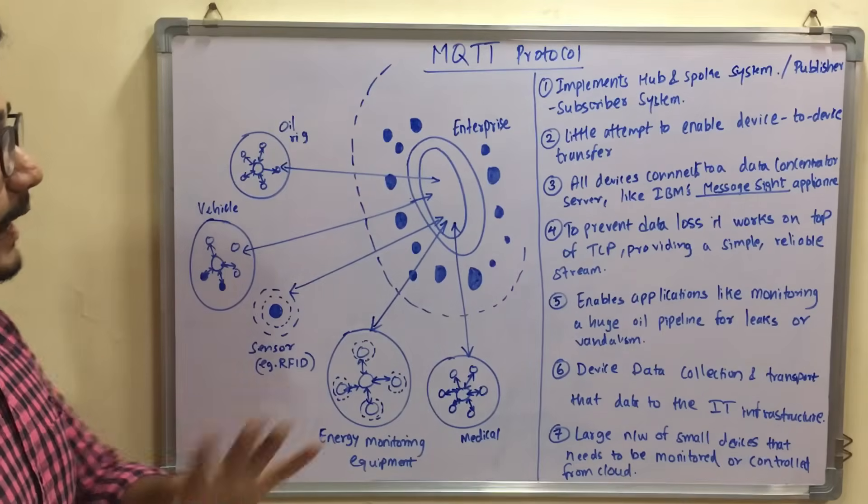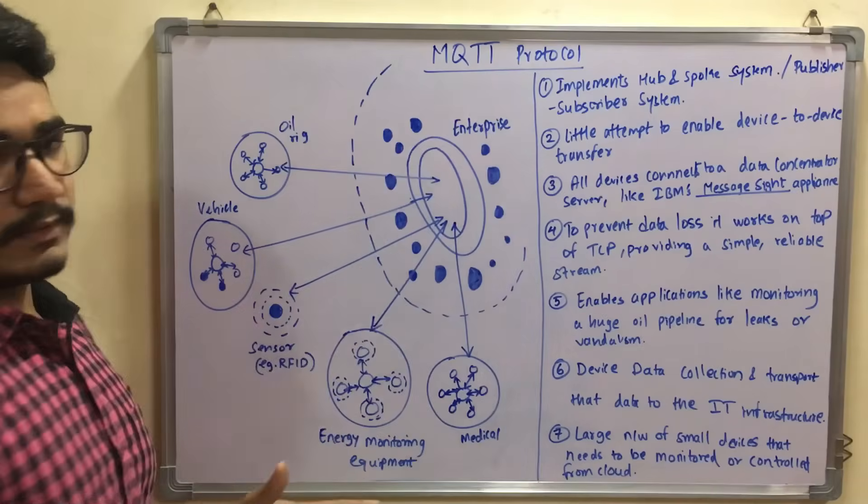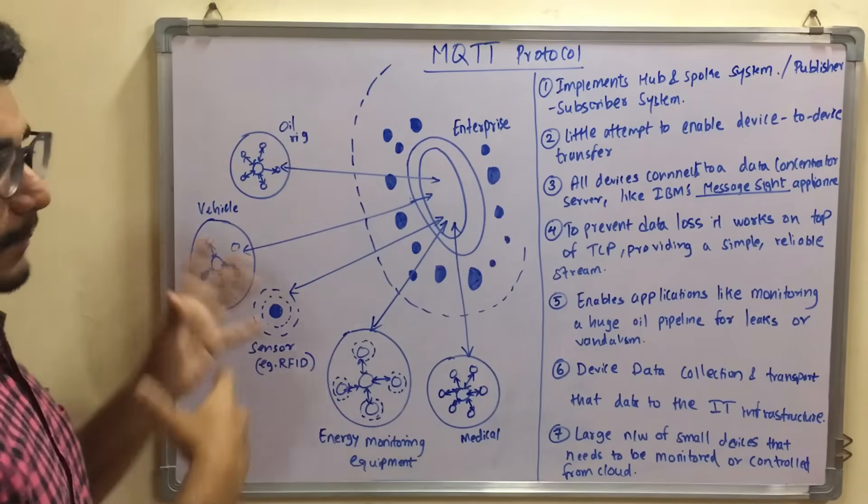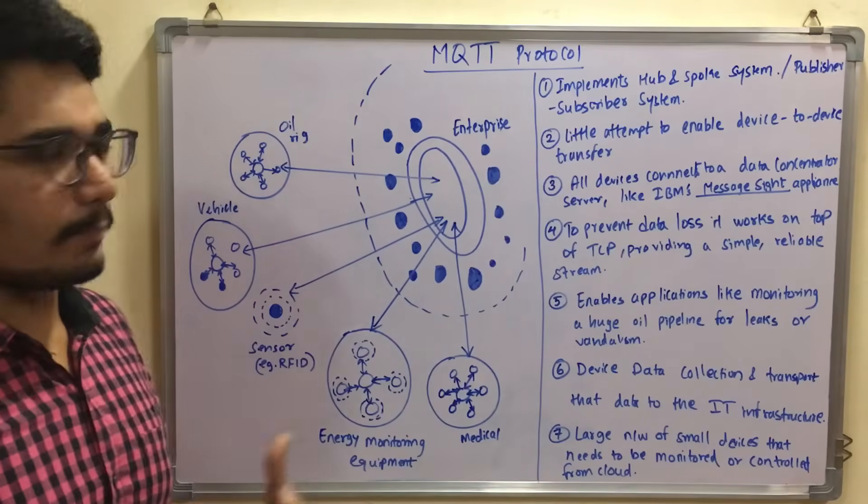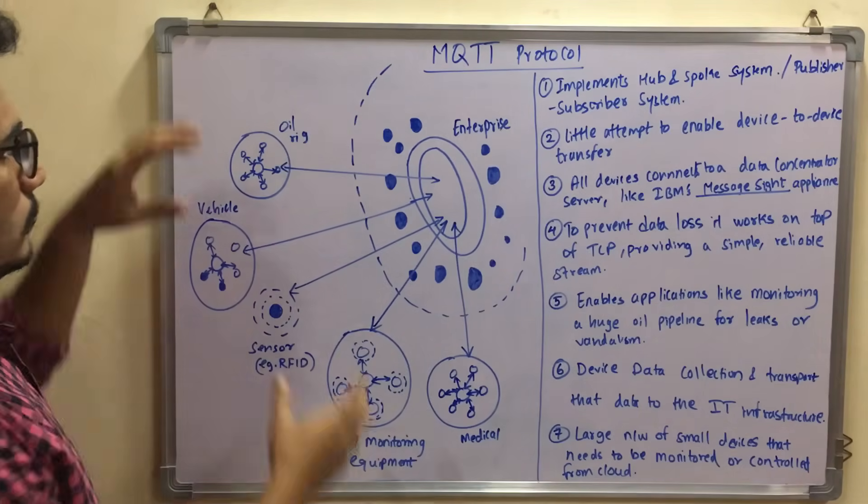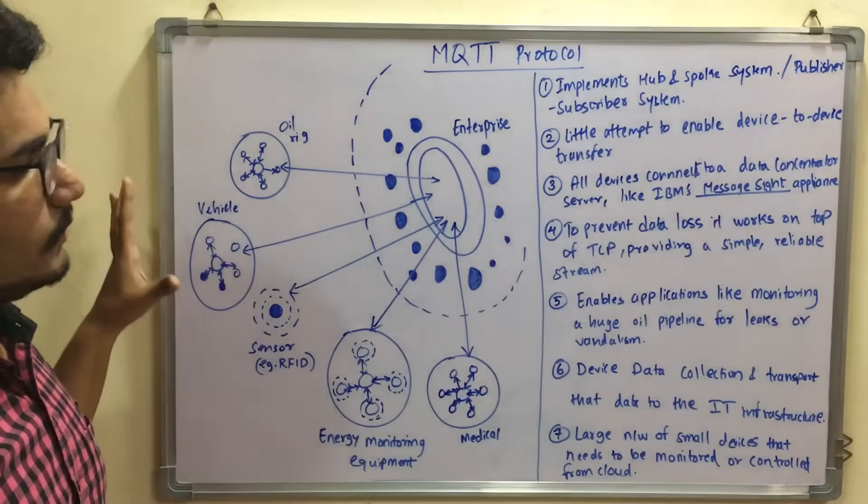That's why we have designed this MQTT protocol for IoT. Like I said, this is a subscriber-publisher mechanism. It's also called the hub and spoke system or publisher-subscriber system. These are the spokes and these are the hubs in circles which you can see.